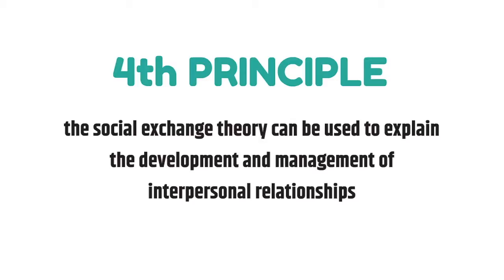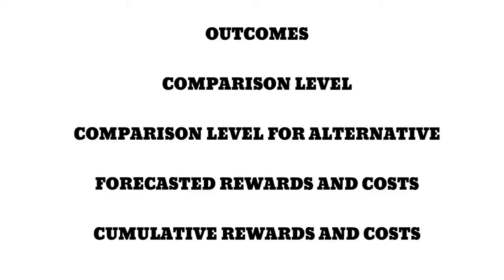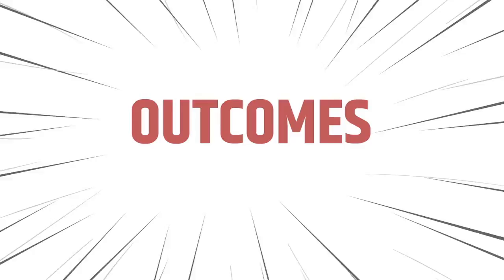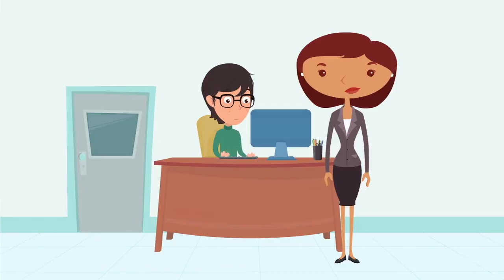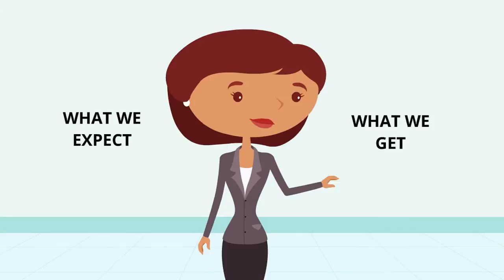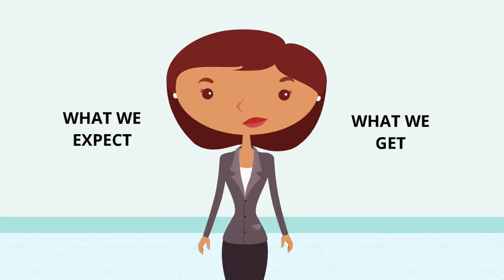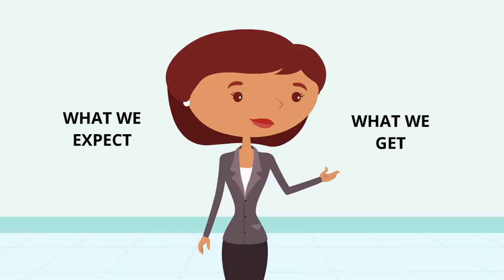The fourth principle demonstrates that the social exchange theory can be used to explain the development and management of interpersonal relationships. According to this principle, there are five different reasons why we choose to interact and create relationships. The first is outcomes — the end products of the interaction, that is, the final costs and rewards we obtain from any communication. The outcome of Sam and Philip's relationship is that Philip has a job and Sam has an assistant. The second is comparison level: we compare the relationship to what we expect we should receive from it. If the relationship meets or exceeds our expectations, we'll probably continue it; if not, we may end it. For example, Sam has certain expectations for Philip, and if he doesn't meet them, she might fire him in pursuit of someone more competent.